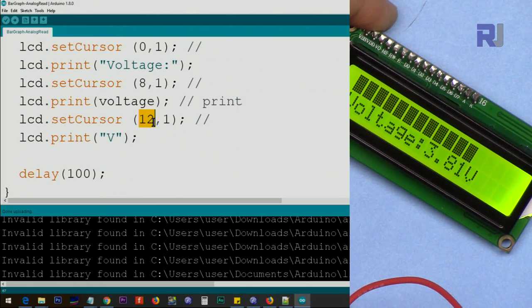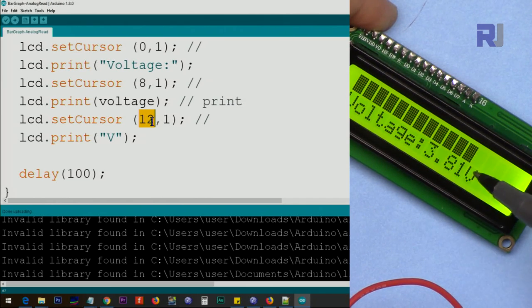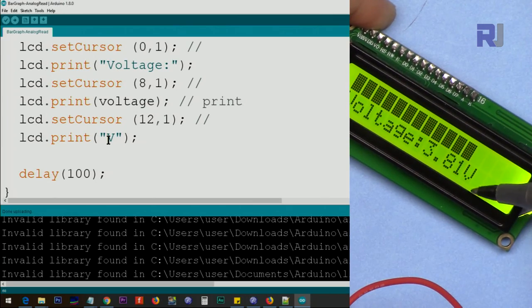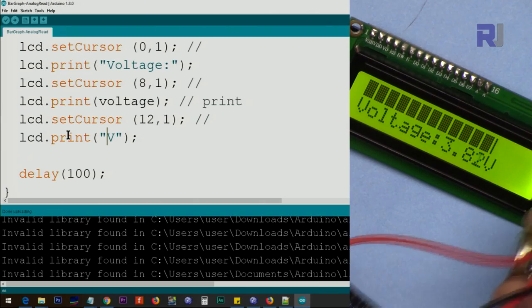Then we set the cursor at character 8, line 1, and we print the actual voltage that we have calculated. Then we go to character 12, and we print this V so it looks nice as a voltage. And we delay 100 milliseconds as we change it.